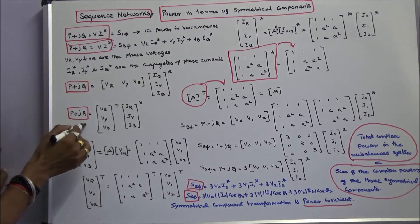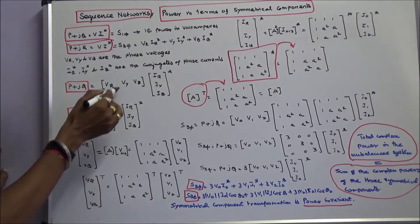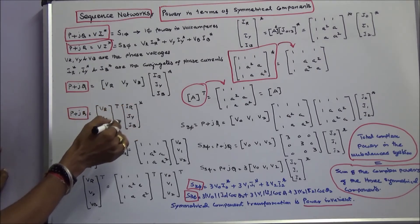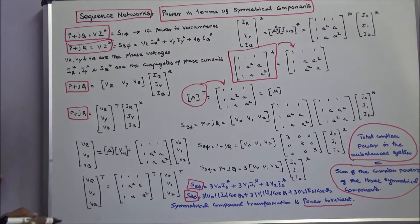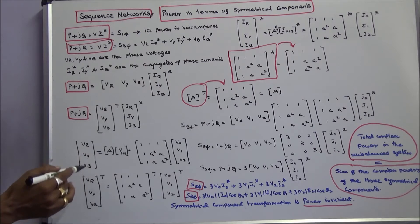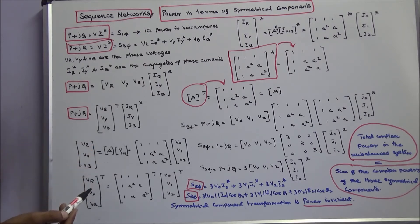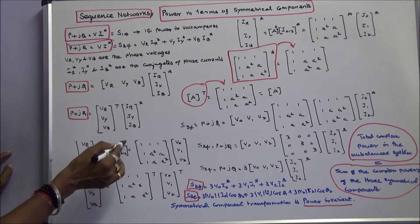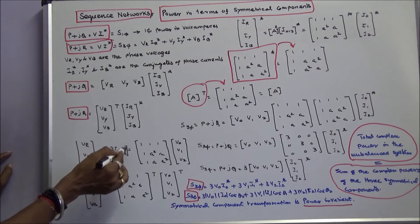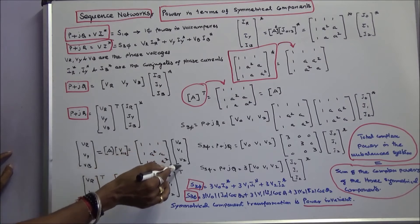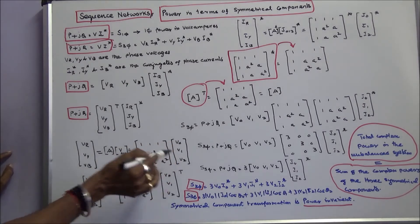P plus jQ can be written as the voltage transpose matrix multiplied by the conjugate current matrix. The phase voltage matrix of VR, VY, VB can be expressed in terms of the symmetrical component voltage matrix as A matrix times the symmetrical component voltage matrix. Therefore, the transpose of this is A transpose times the sequence voltage matrix transpose.